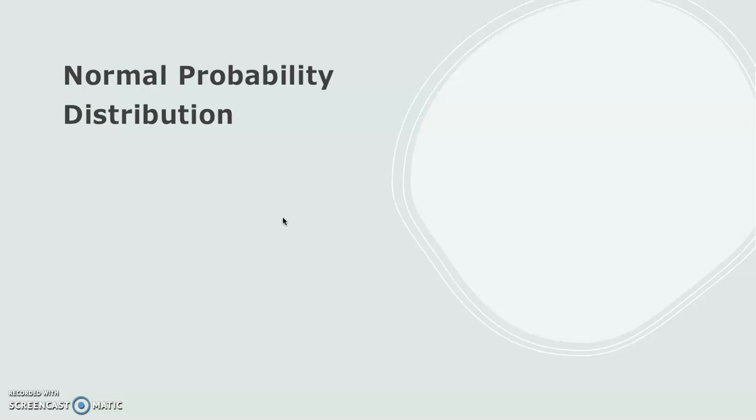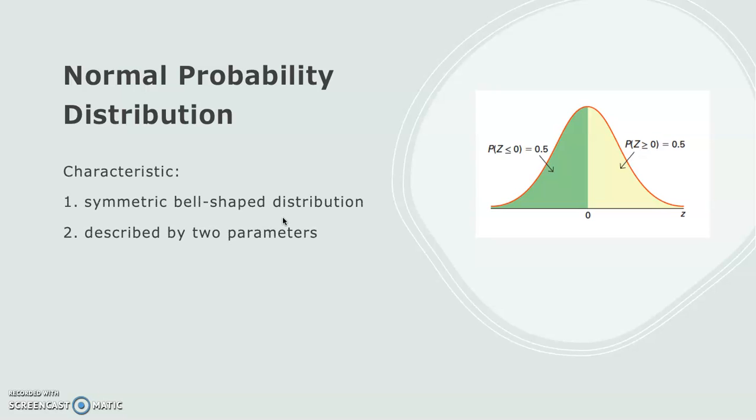The normal probability distribution is the most extensively used probability distribution. It has a symmetric bell-shaped distribution, as seen in the diagram. It is described by two parameters: the population mean μ and the population variance σ². Third, the normal distribution is asymptotic, in the sense that the tail gets closer and closer to the horizontal axis but never touches it.